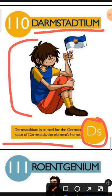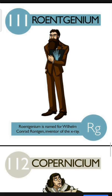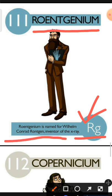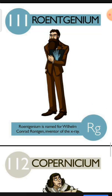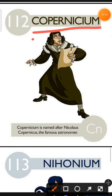Element number 111 is Roentgenium. The characteristic of Roentgenium is: Roentgenium is named for Wilhelm Conrad Röntgen, inventor of the X-ray. Element number 112 is Copernicium. The characteristic of Copernicium is: Copernicium is named after Nicholas Copernicus, the famous astronomer.